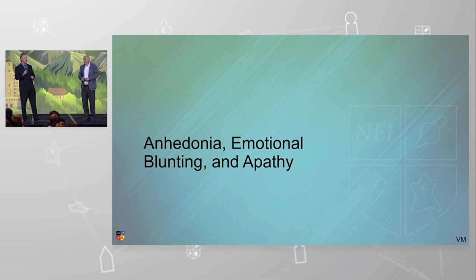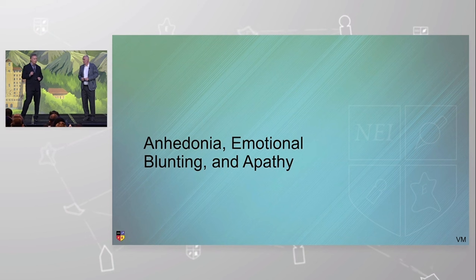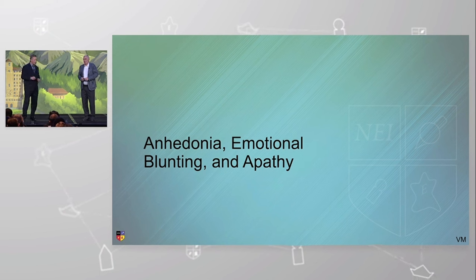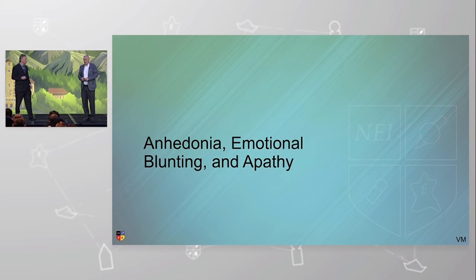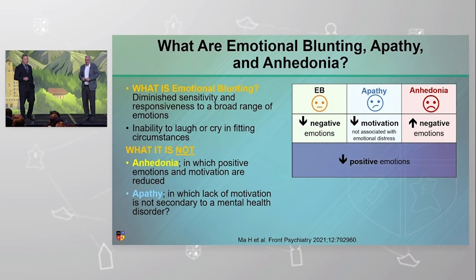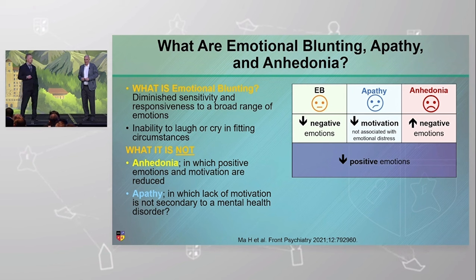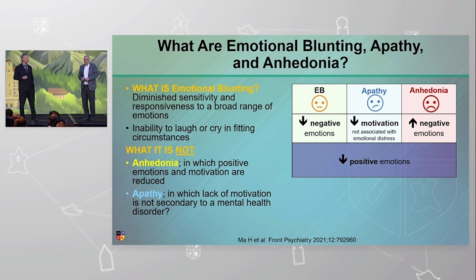We're doing that because we want to reduce some of the confusion, but we recognize there's probably a fuzzy boundary here — a very fuzzy and gray zone between some of these. One of the questions asked us to differentiate this, and you can see emotional blunting, apathy, and anhedonia in the far right with that little cartoon there.